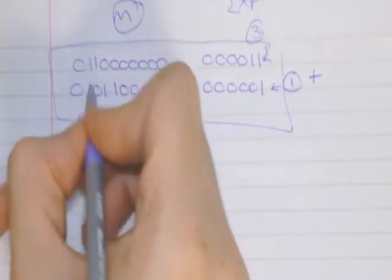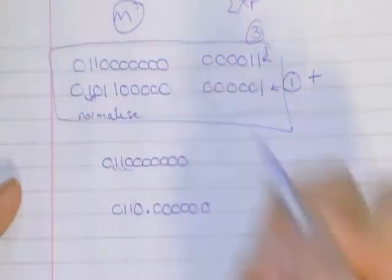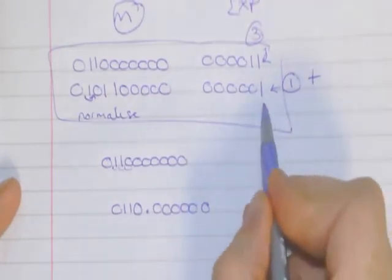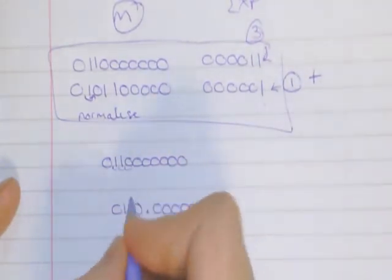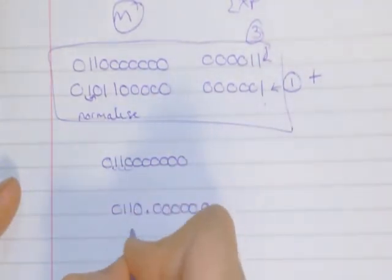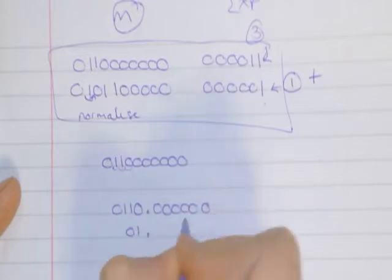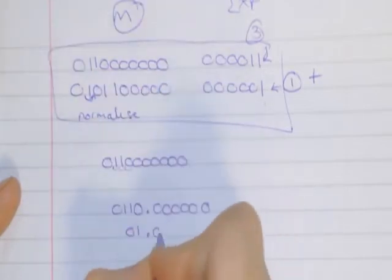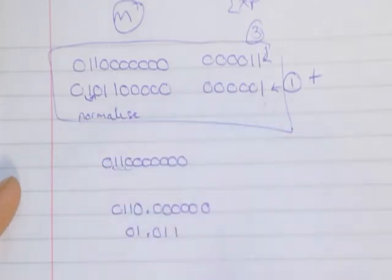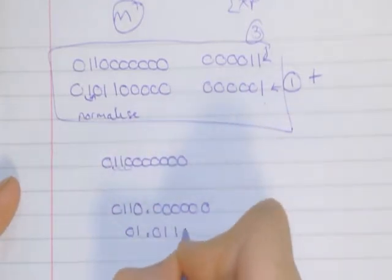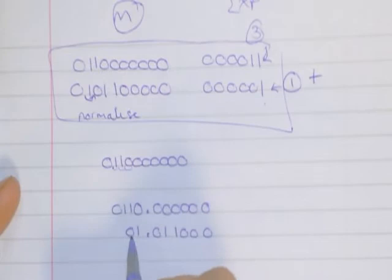Now, the next one would start here, and it moves 1 place, because it's a positive 1. So I will end up with 0, 1, 0, 1, 1, 0, 0, 0,